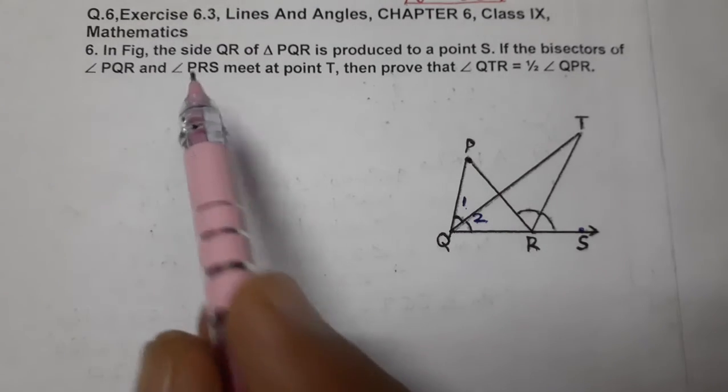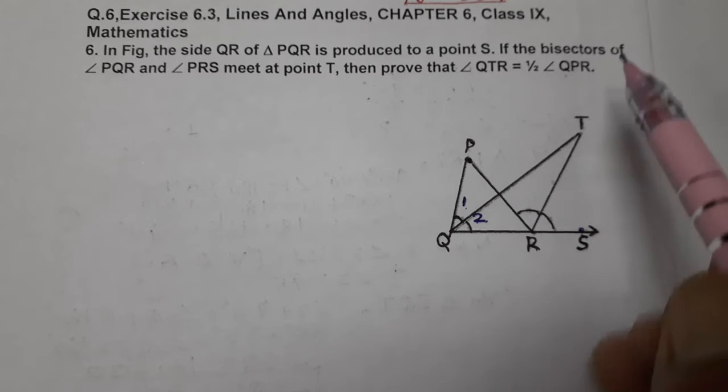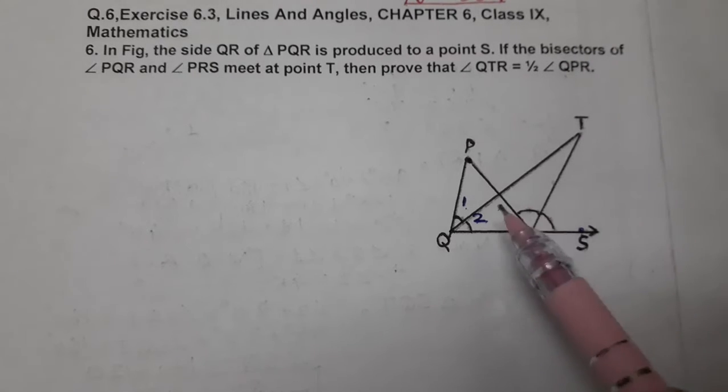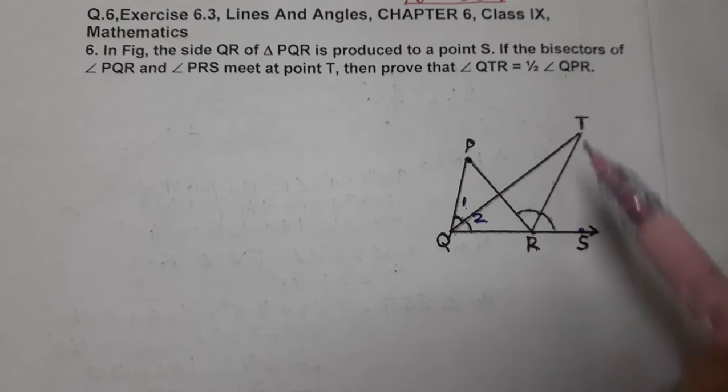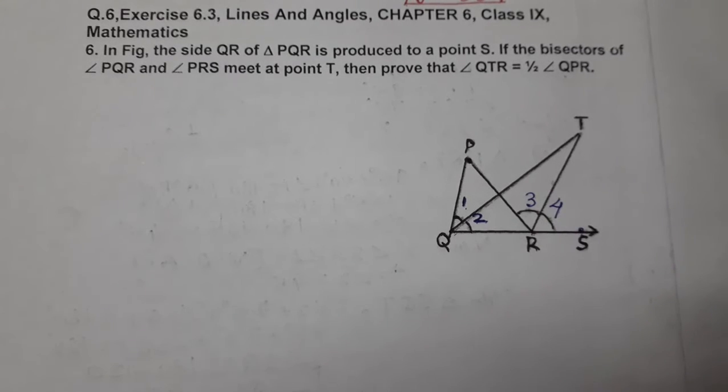And angle PRS, the bisector is RT. Here also the bisector is given, so 2 bisectors are: one is QT which is the bisector of PQR, and one is RT which is the bisector of PRS, which divides into angles 3 and 4. These two angles are also equal.